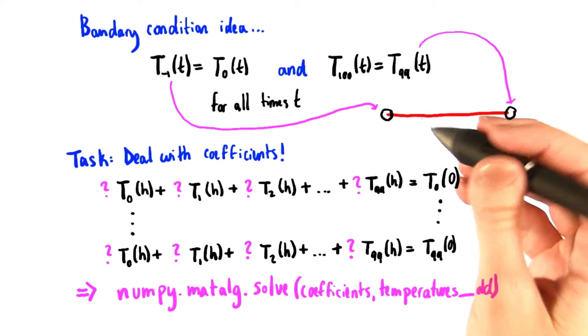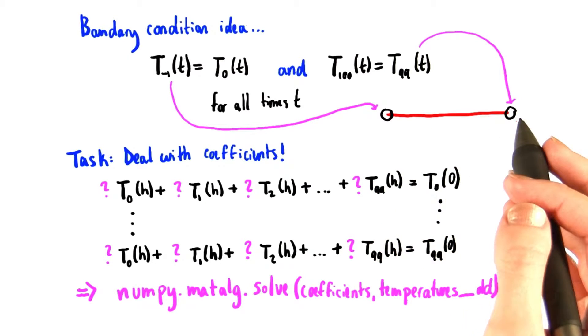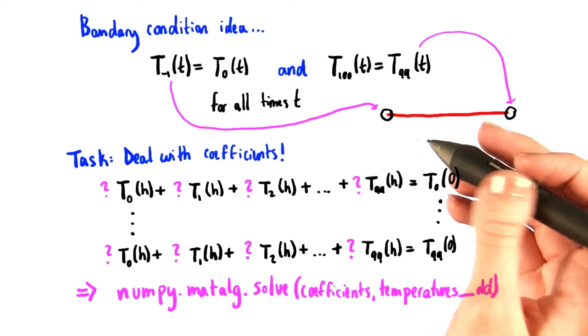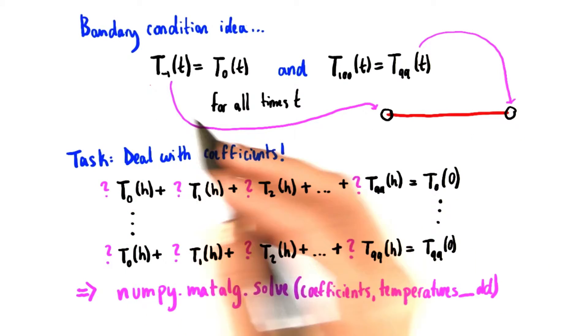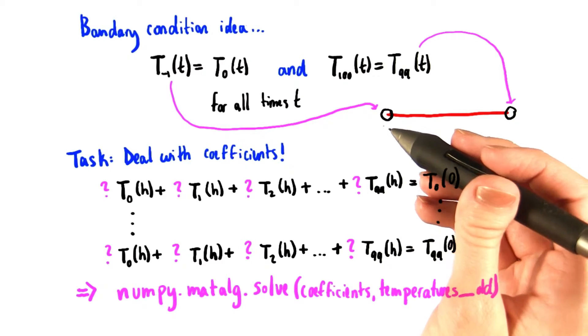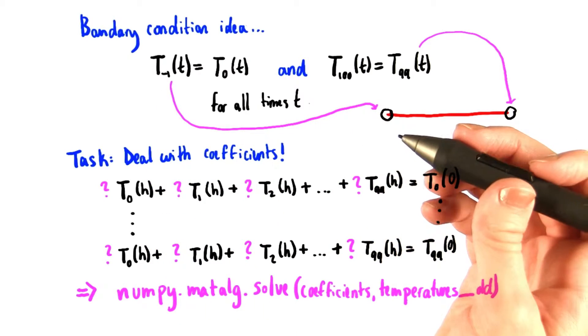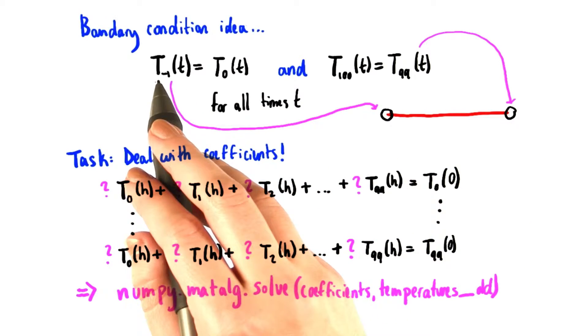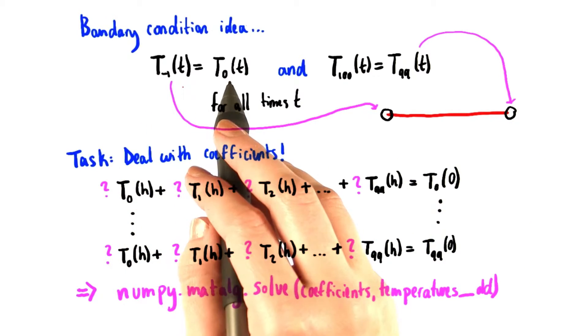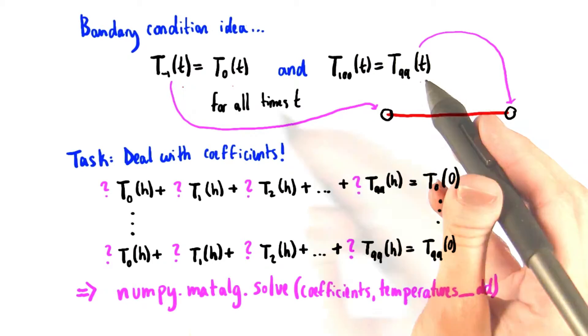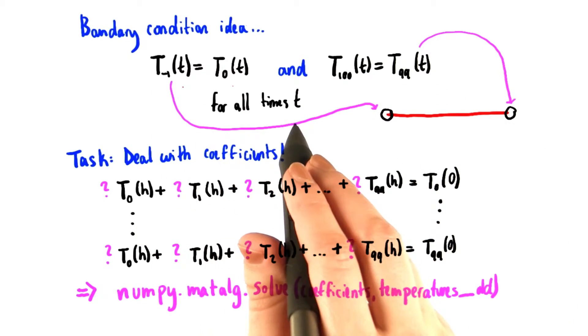One problem that we have to deal with is how to handle the segments on either end of our wire. Both of these have an adjacent segment to one direction, but not to the other. Since our segments start at 0 and count up to 99, our problem more explicitly is that we don't have a segment numbered negative 1, nor a segment numbered 100. To deal with this, we're just going to set the value of T negative 1 to equal T0, and similarly for T100, setting that to T99. This is going to be true for all times T.